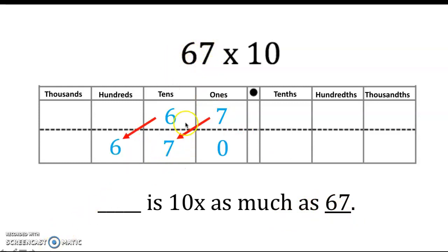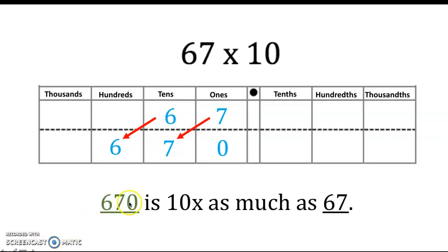My next step is that each digit within my factor is going to move to the left. Because digits are moving to the left, they're increasing in their value by 10 times. The six in the tens place increases to a six in the hundreds place — the six in the hundreds place is 10 times greater than the six in the tens place. The same applies to the seven: the seven in the tens place is 10 times greater than the seven in the ones place. So we write down 670, which is our product of 67 times 10, is 10 times as much as — or 10 times greater than — 67, which is our factor.